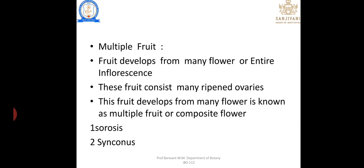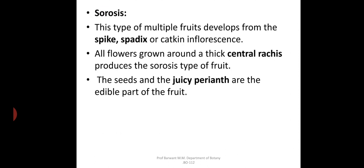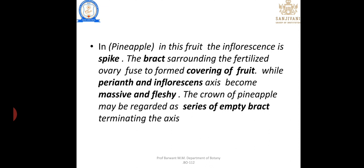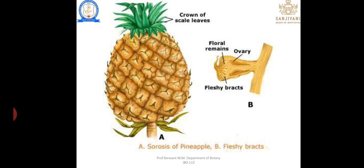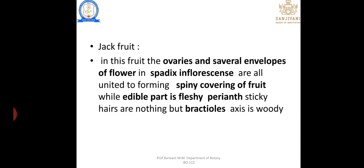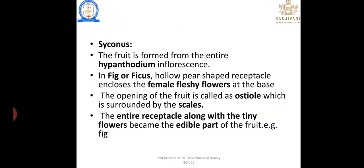Multiple fruit: the fruit develops from many flowers or the entire inflorescence; it consists of many ripened ovaries. Sorosis — this type of multiple fruit develops from spike, spadix, or catkin type inflorescence; all flowers grow around the central rachis, producing the sorosis type fruit; the seed and juicy perianth are the edible parts. In pineapple, bracts surround the fertilized ovary and as the perianth and inflorescence become massive and fleshy, the crown of pineapple may be a series of empty bracts. In jackfruit, the envelope of flowers in a spadix inflorescence unite to form a spiny covering with the edible part being the fleshy perianth.